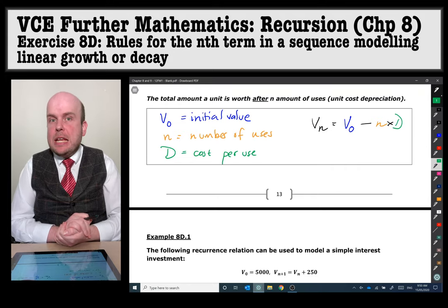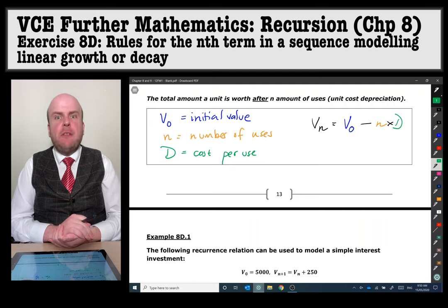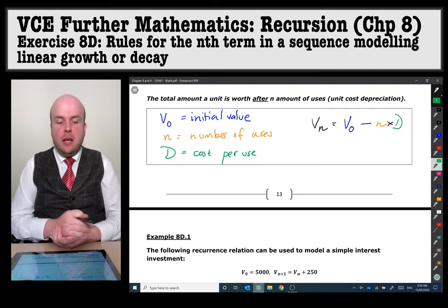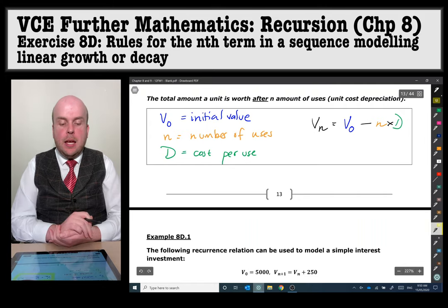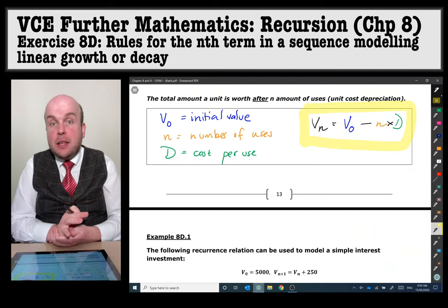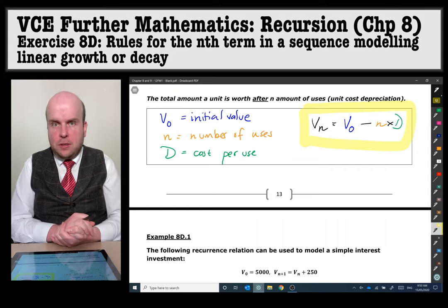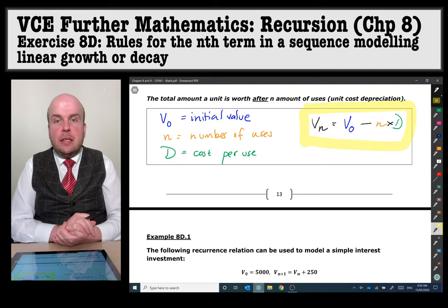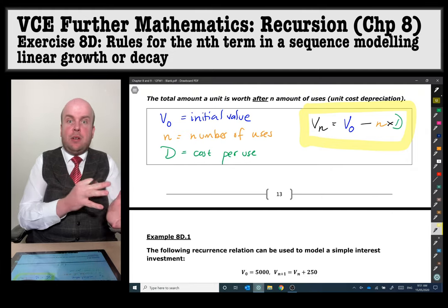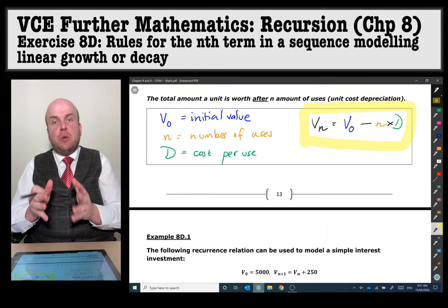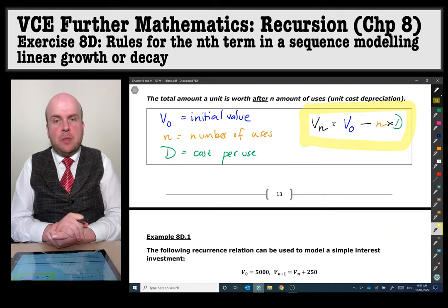The total amount a unit is worth after n number of uses. So unit cost depreciation. This is when we have a printer or something that depreciates by 15 cents for every 10,000 copies or something along those lines. We still use the formula as established earlier. The initial value is the V0, the number of uses is the n, so rather than time periods it's number of uses. And d is the cost. A common trap with this sort of question is that they'll mention cents in one part and the answer in dollars. Always always always make sure your units are the same. Convert the cents into dollars or dollars into cents.